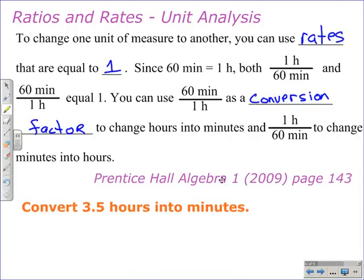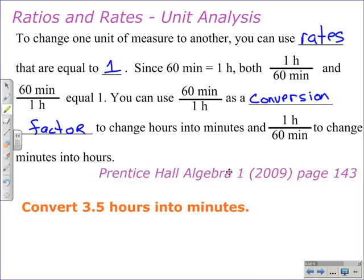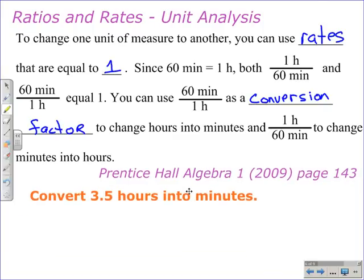We're getting into a special rate, or actually unit analysis, which is a special part of rates, and it's really learning how to keep track of the units correctly. Here we want to convert 3.5 hours into minutes. In the notes up here, to change hours into minutes, it tells us you can use 60 minutes over 1 hour as a conversion factor to change hours into minutes.